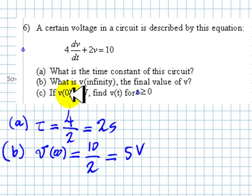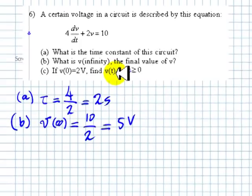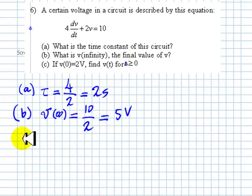Finally, part c. If the initial voltage, the voltage at 0 is 2, find V as a function of t for t greater than 0. The voltage as a function of time for t greater than 0 is going to be the final value. The final value is going to be 5.